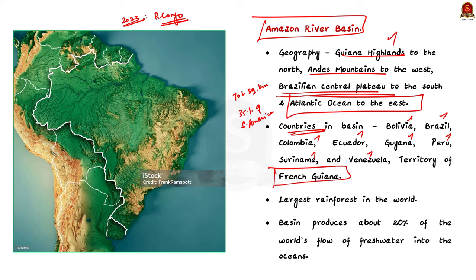Most of the Amazon Basin is covered by the Amazon Rainforest, also known as Amazonia, with a 5.5 million square kilometer area of dense tropical forest — the largest rainforest in the world. It comprises around 40% of Brazil's total geographical area. This basin produces 20% of the world's flow of fresh water into the oceans.